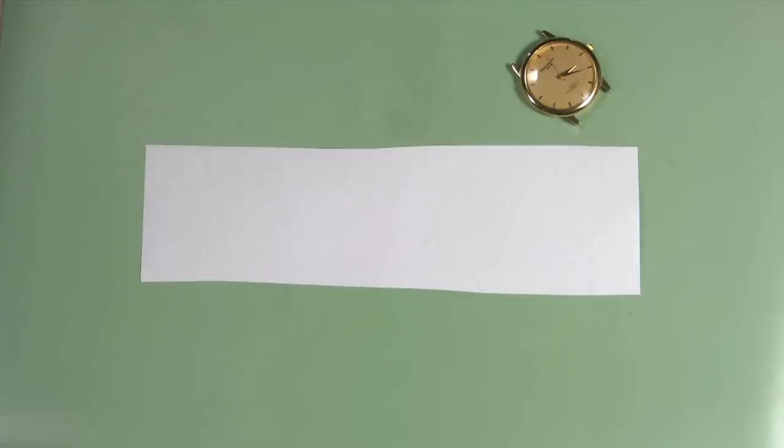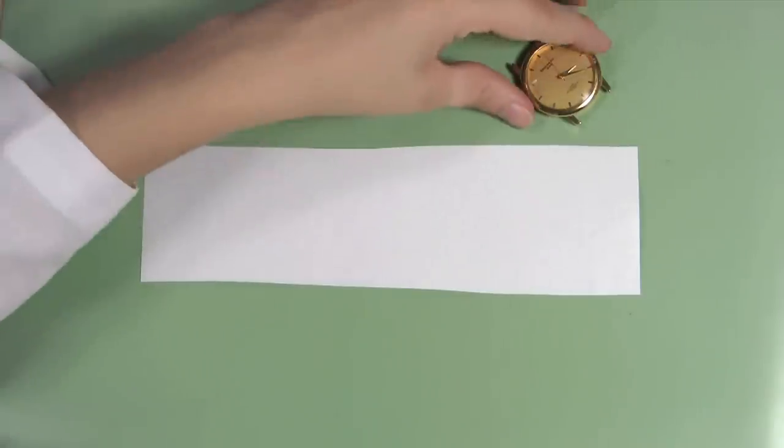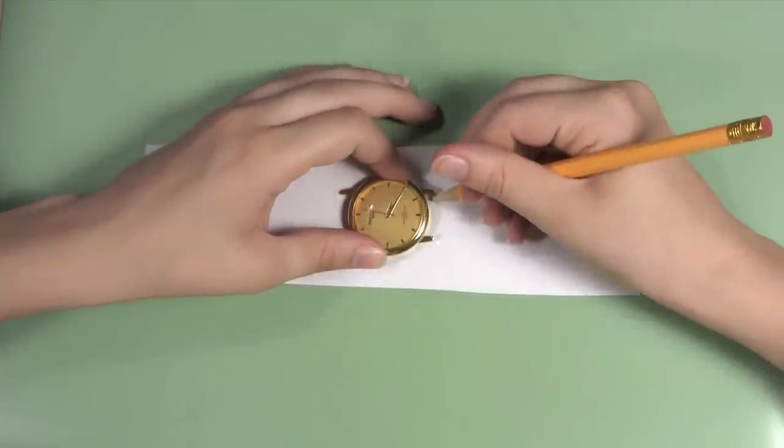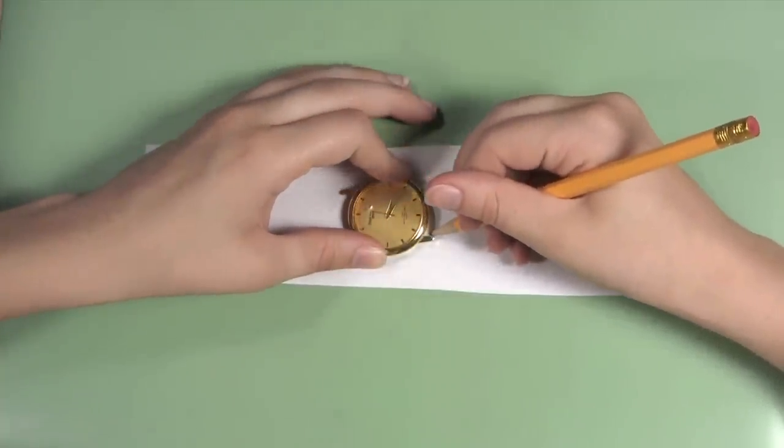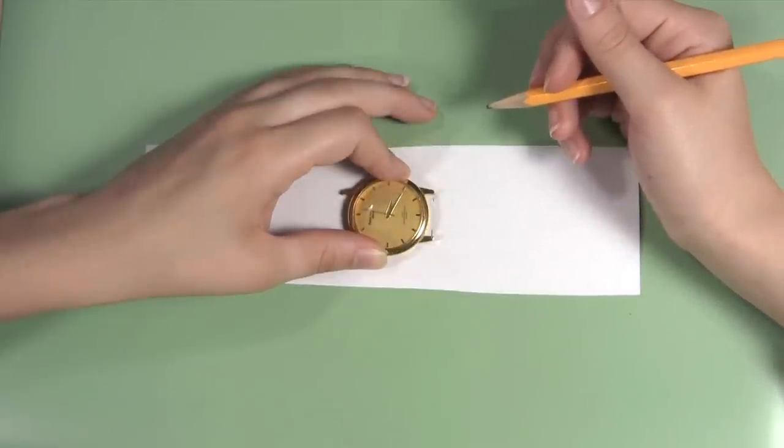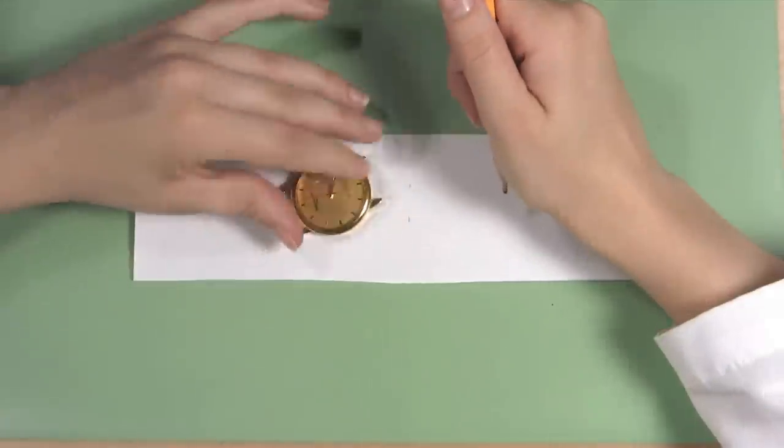Lay your watch case in the center of the strip of paper and mark where the spring bars would sit with the pencil. You can do this by looking for the indentations in the watch lugs and marking the paper just where they are. Do this for both sets of the watch lugs.